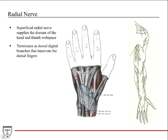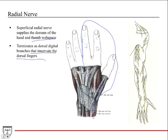The radial nerve — the main branch to discuss here is the superficial radial nerve, which splits just at the elbow. It travels over the anatomical snuff box and supplies the dorsum of the hand and the thumb web space. It terminates as dorsal digital branches that innervate the dorsal surfaces of the first two fingers.